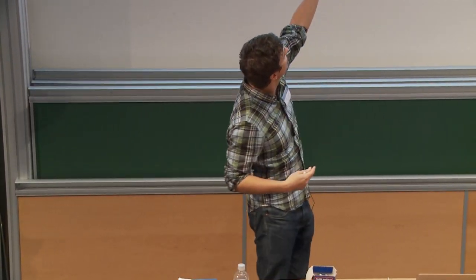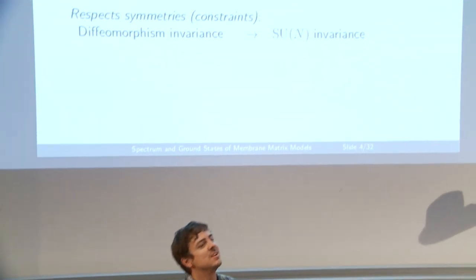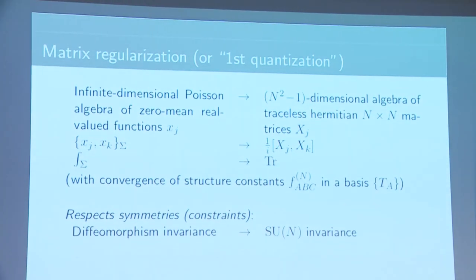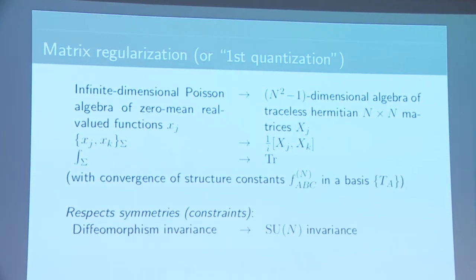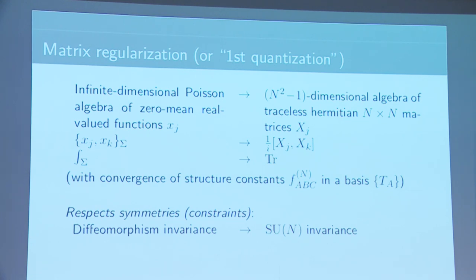There is an existence of a sequence of bases and thus a sequence of structure constants in those bases such that you get convergence. The whole idea is that this representation respects the symmetries or constraints of the theory. In the original membrane theory we had diffeomorphism invariance on the surface — specifically area-preserving diffeomorphisms, since we also want to conserve the area. On the matrix model side this is represented as SU(N) invariance, with the special unitary group arising because of this area-preserving constraint.